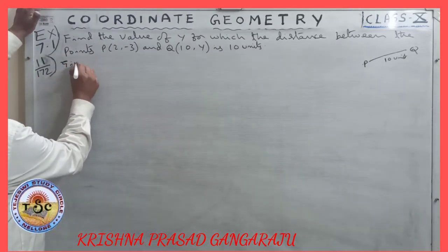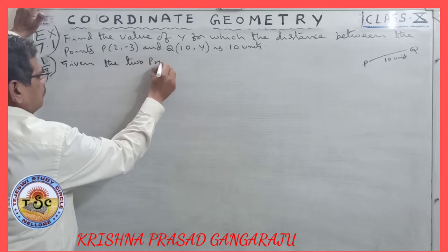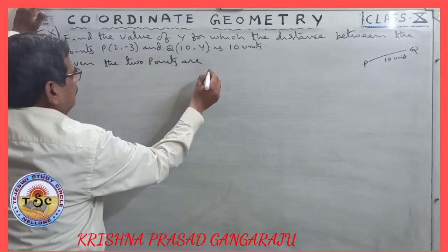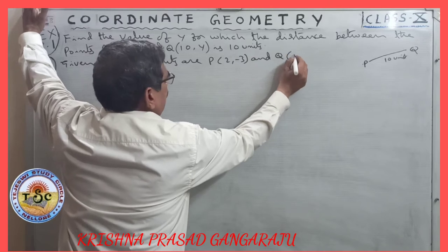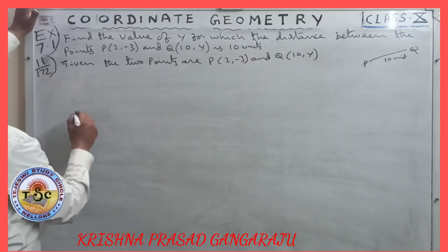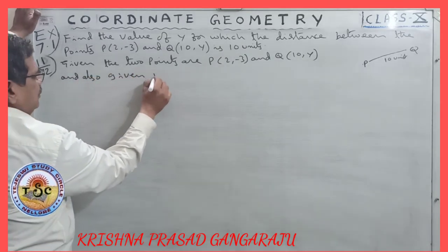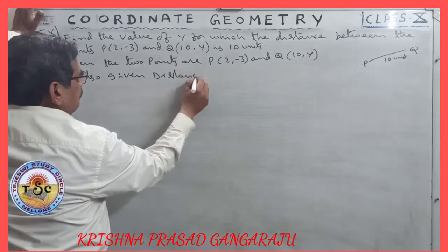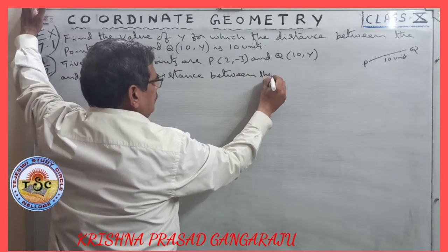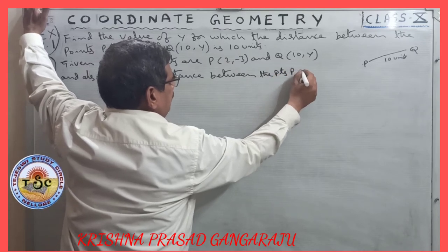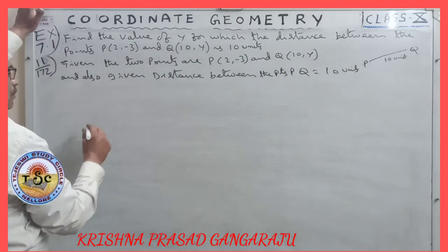Given: the two points are P(2, -3) and Q(10, y), and the distance between points P and Q is equal to 10 units. So we have our given data.